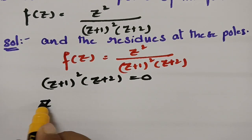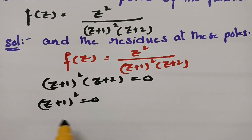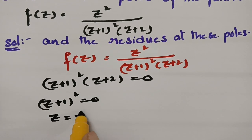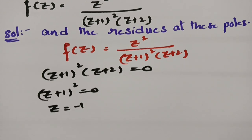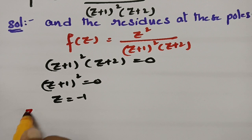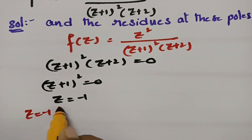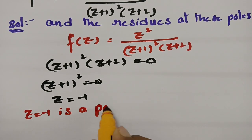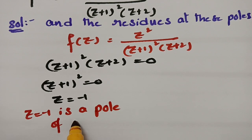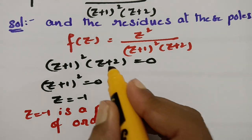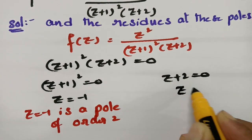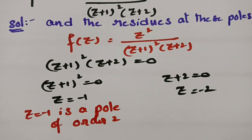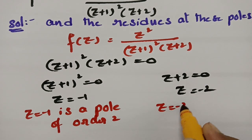If I equate (z+1)² = 0, our z value will be minus 1. It is very clear that it is a pole of order 2, so z = -1 is a pole of order 2. Next, if I equate z+2 = 0, then z = -2, so z = -2 is a simple pole.